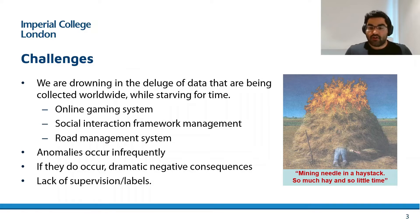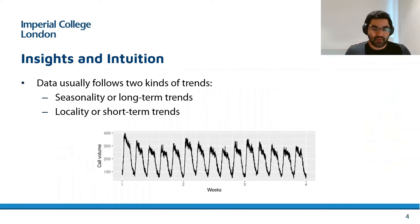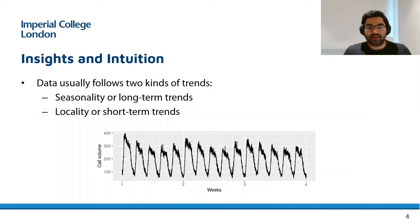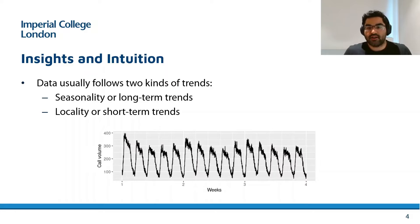Considering all of these challenges, the main contribution of this work is on how we can accurately detect anomalies even with limited data and limited training time. Before I dive into the method itself, let me first discuss some insights and intuitions. Usually time series data follows two kinds of trends: seasonality or the long-term trend, and locality or the short-term trend.